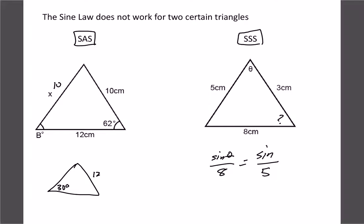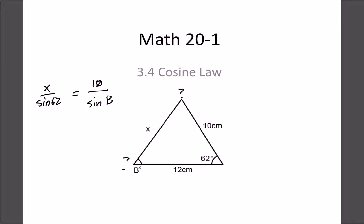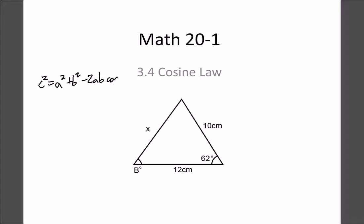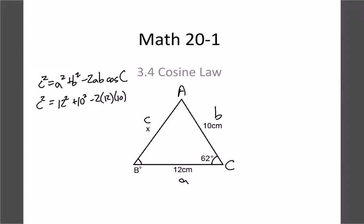Let's go back to the first question and use cosine law. Our formula is c² = a² + b² − 2ab·cos C. Label the side we're looking for as c, so angle C is 62°, and the two known sides are a = 12 and b = 10. Plug those into the formula: c² = 12² + 10² − 2(12)(10)·cos 62°. Type that into your calculator and square root the answer.